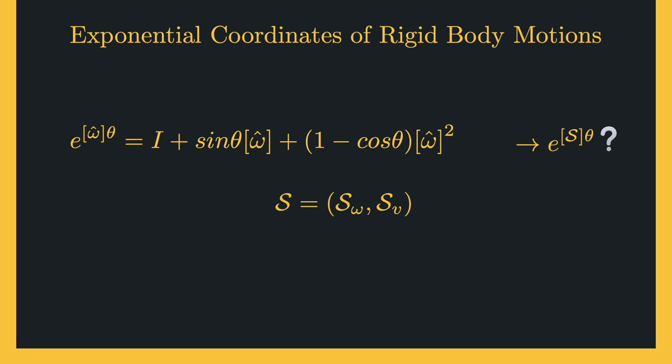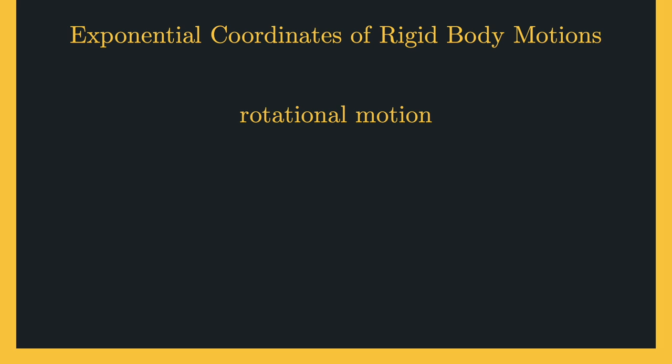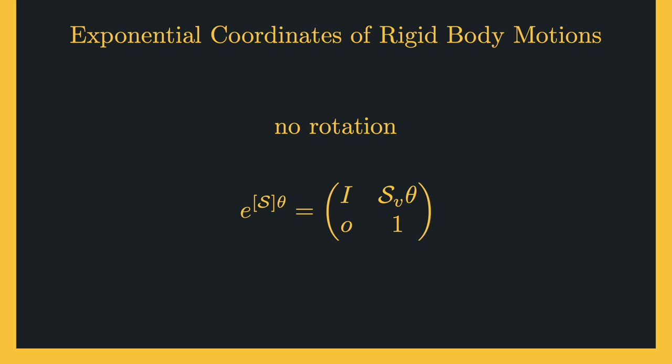Let the screw axis be defined by its angular and linear components. We have two cases. If we have rotational motion, then for any distance theta traveled along the axis, the matrix exponential for rigid body motions can be written as this matrix. If there is no rotational motion — meaning the rotational part is zero and the screw axis is pure translation — then the matrix exponential for rigid body motions can be found using this matrix. Here theta is the linear distance traveled and the identity matrix I in the upper left shows that the orientation doesn't change; the motion is pure translation.